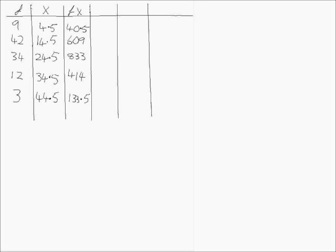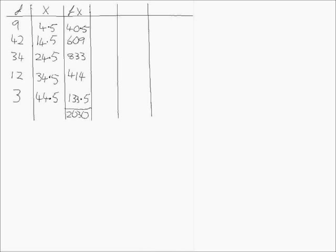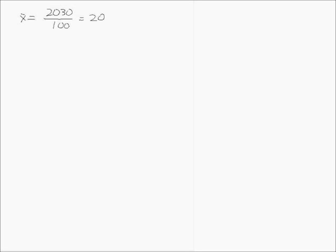We sum the fx column and get 2030. Our formula also requires n, the number of observations, which is the total frequency — in this instance 100. Applying the x-bar formula gives us 2030 over 100, resulting in a mean value of 20.3.